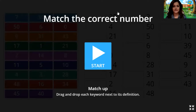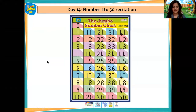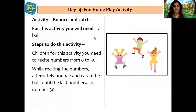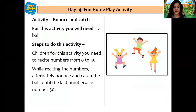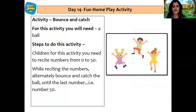And now children, let's come to the home play activity for today. Here is the home play activity and the name of the activity is 'Ball.' You need to recite numbers from 0 to 50, and while reciting the numbers, alternately bounce and catch the ball until the last number — number 50. So we are going to just bounce and catch: one, two, like this. I hope you are going to enjoy doing this fun home play activity at home.